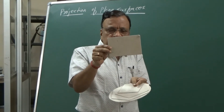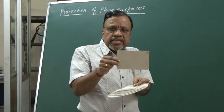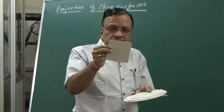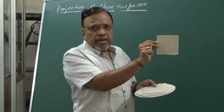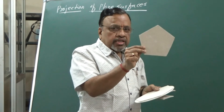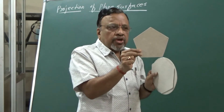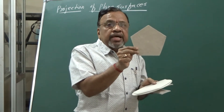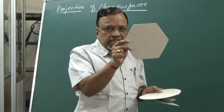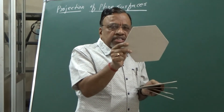As you can see, this particular lamina has four sides, but the opposite sides are the same while the adjacent sides are different — this corresponds to a rectangular lamina. This next lamina has all four sides the same, so we consider this to be a square lamina. This lamina has five equal sides, so it is a pentagonal lamina. This one has six sides, so we consider it a hexagonal lamina.